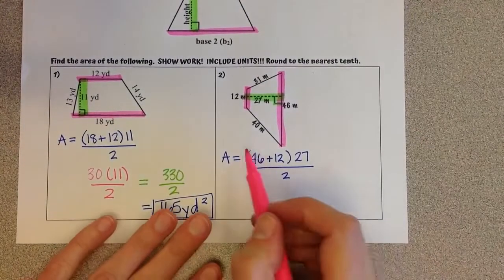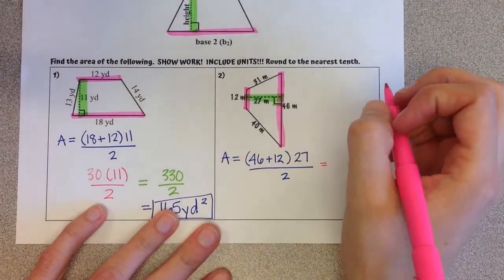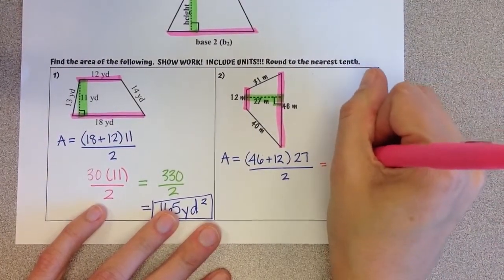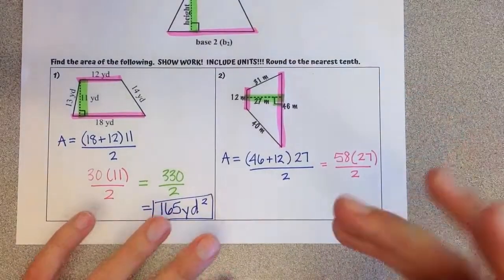So again, we do the parentheses first. I'm going to add 46 plus 12 is 58, times our height of 27, divided by 2.